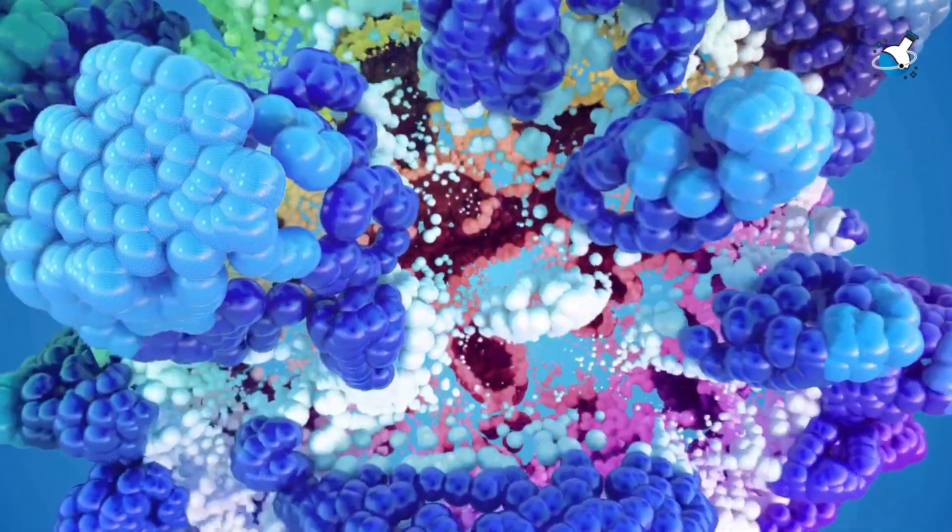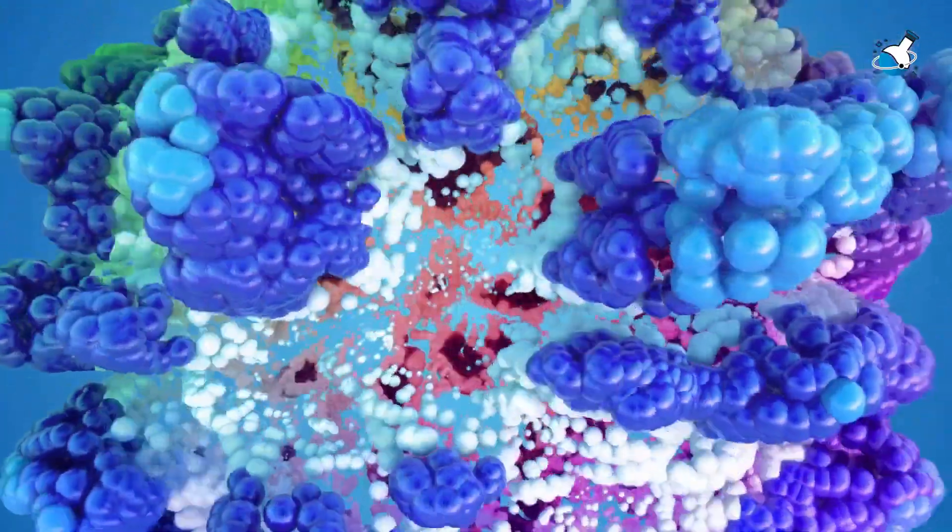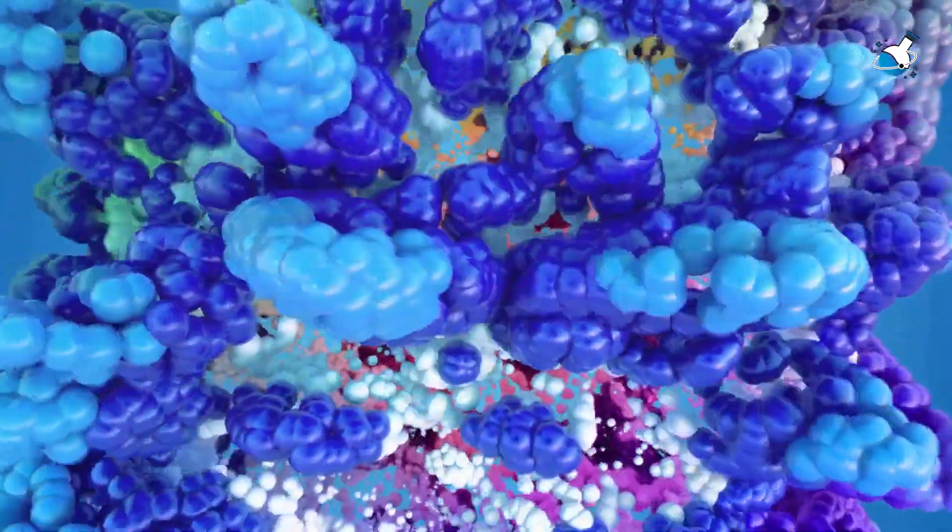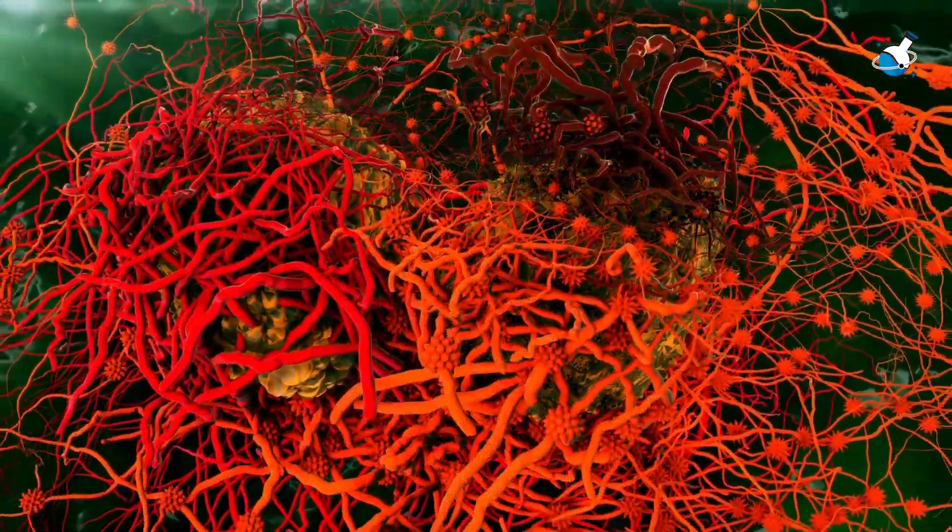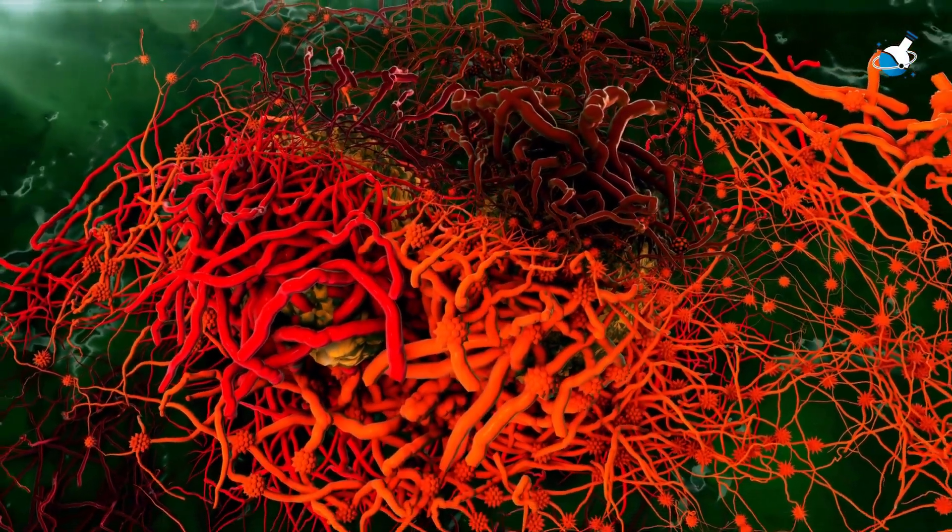When exposed to radiation, molecules inside body cells absorb the energy being carried. This can ionize the molecule or even break it apart, depending on the amount of energy. Both cases produce reactive species.